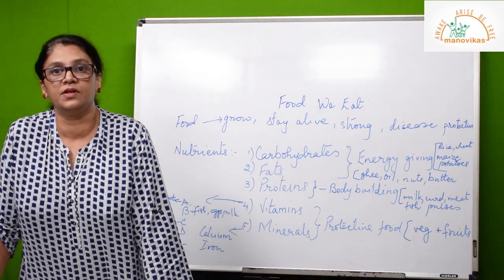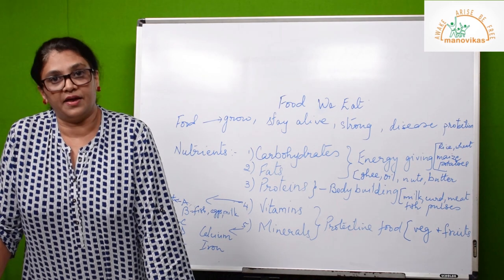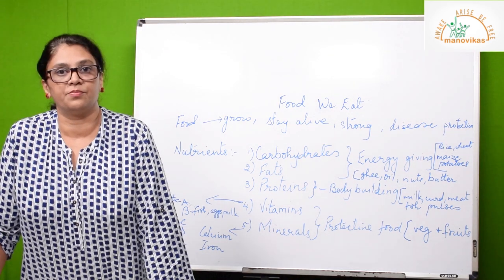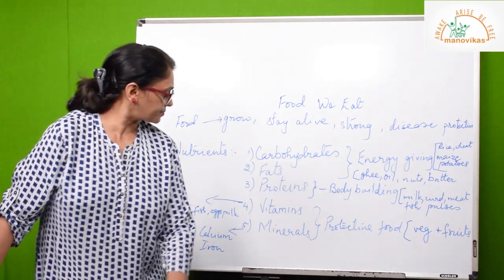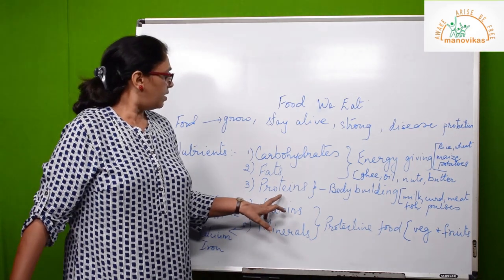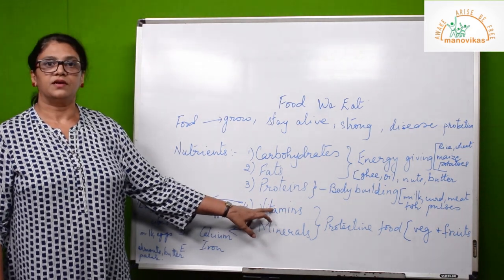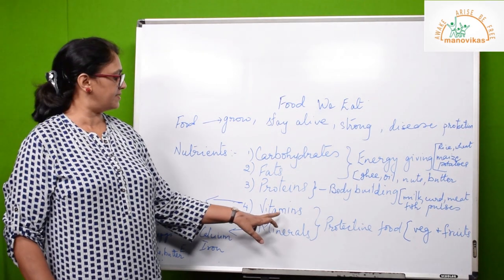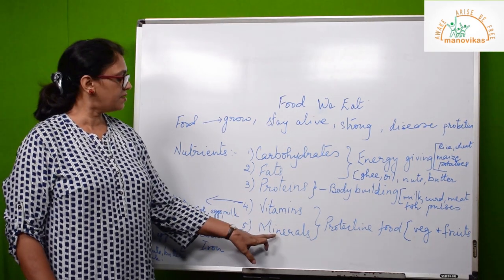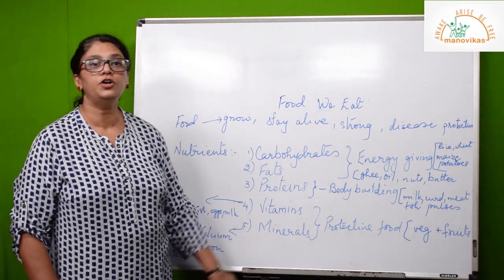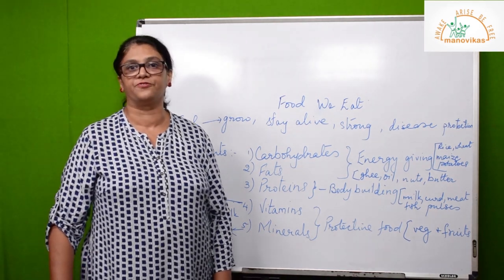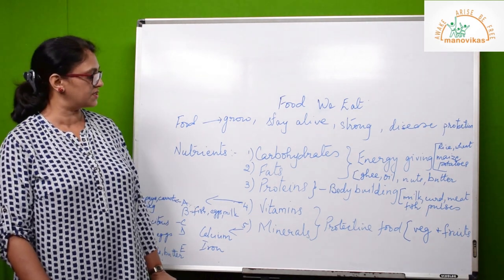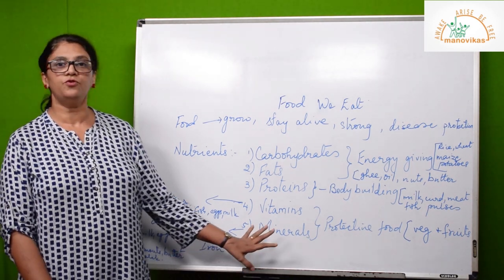Pulses are also rich in proteins — for example, masoor dal, urad dal, and toor dal are all examples of pulses. The next nutrient in food is vitamins. Vitamins and minerals are called protective food because they protect us from various diseases.